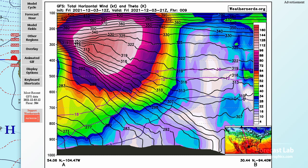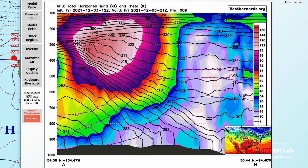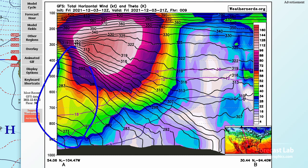Now the first thing we have to do is orient ourselves. A is at the top, B is at the bottom, so we're going from Canada to Texas. This is a plot of wind speed and theta — potential temperature — that's basically the temperature normalized to 1,000 millibars, close to sea level.